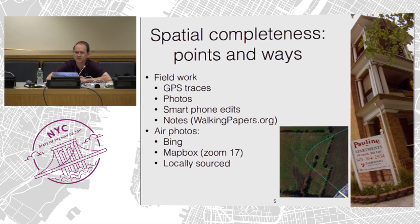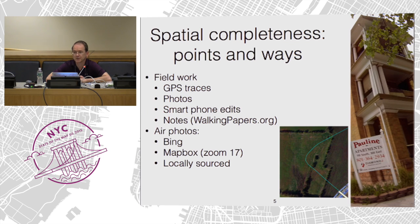Spatial completeness is the first thing that people worry about — do you have all the points and ways in your area? That really needs field work, GPS traces, smartphones, photos. You can see my photo of an apartment building in Salt Lake City and my trace going through what was a farmer's field and is now a new subdivision. There's also notes and walking papers, depending on how you like to do field work. And of course, aerial photos such as Bing and Mapbox. If you zoom out in Mapbox, you sometimes find fresher images. There's also locally sourced data such as the national AIP agriculture inventory.